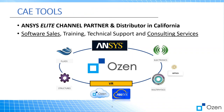As a channel partner, we provide software — we sell software in Northern California and Nevada. We provide technical support, training classes listed on our website, and engineering consulting services. We work with the full suite of ANSYS products including structural mechanics, fluids, electromagnetics, high-frequency and low-frequency signal integrity, multi-physics, and optics. We also work with virtual reality collaboration tools.